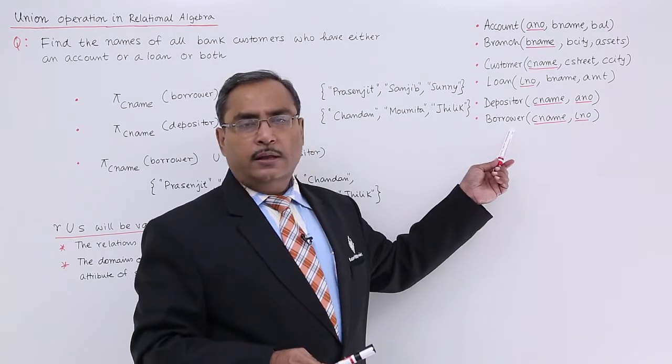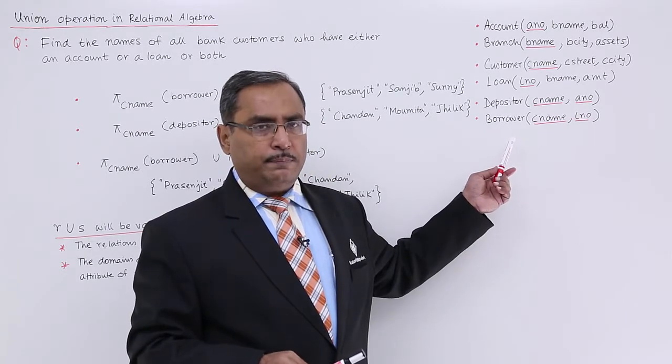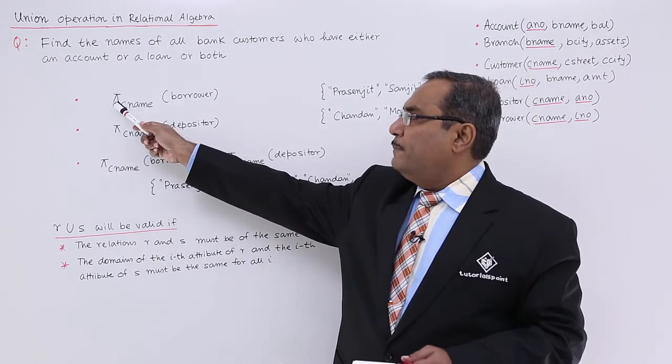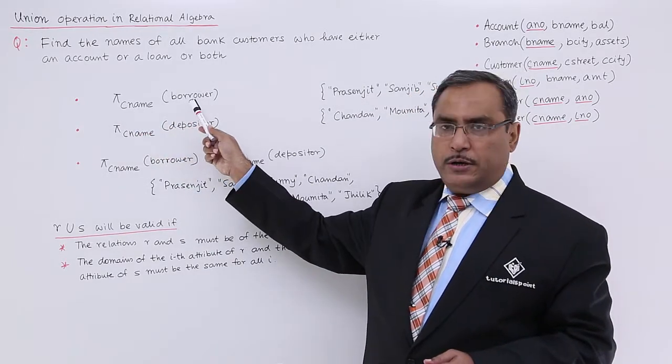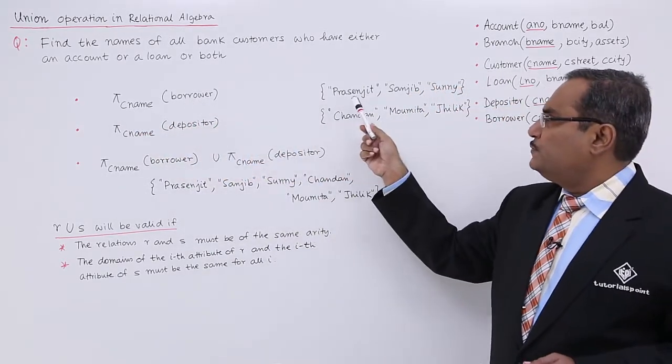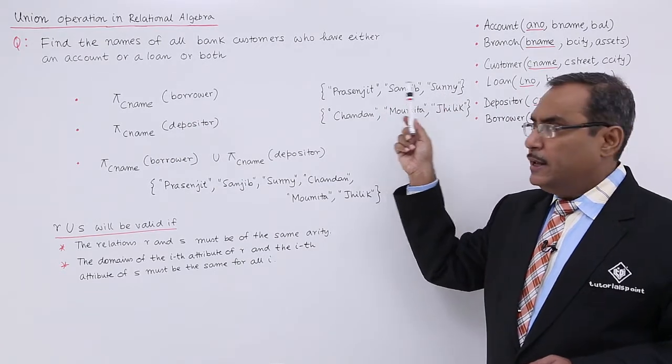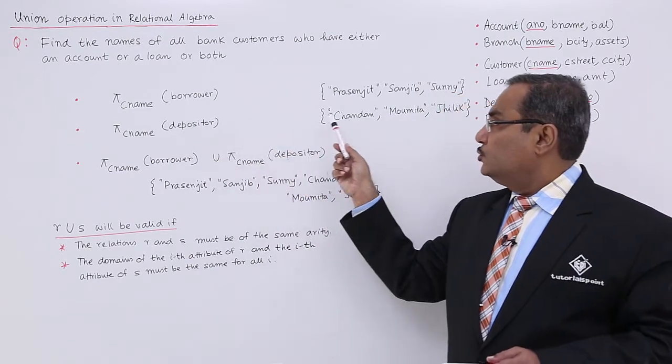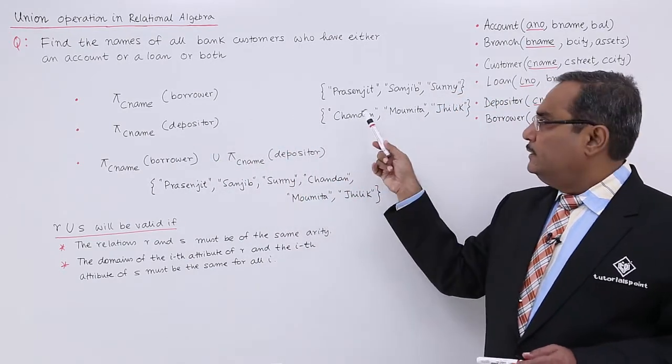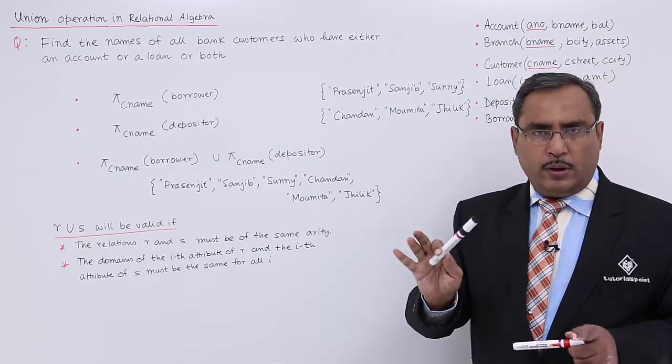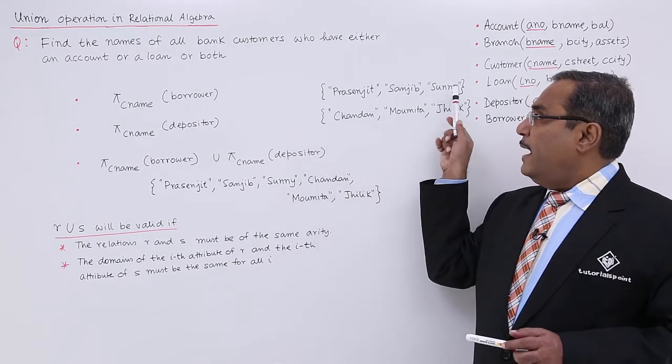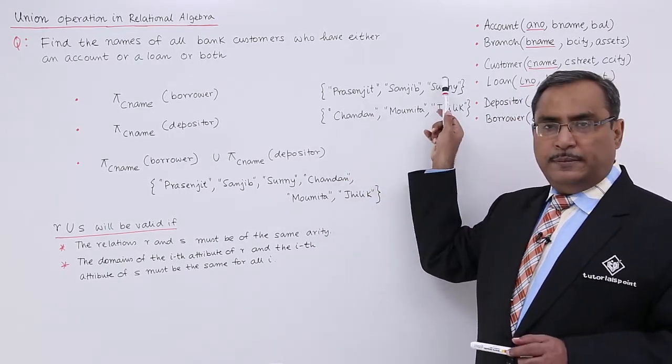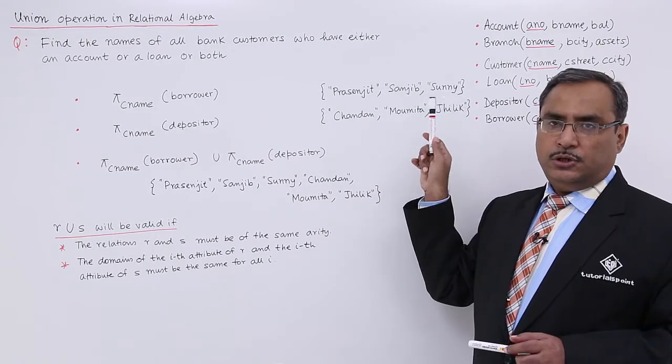It is quite simple. We will be applying the PI operation. PI means projection operation. So I shall be writing in this way: PI customer name operated on borrower. Let us suppose it is producing these three names, and then PI customer name operated on depositor. So they will produce, say, these three names arbitrarily written. It is not mandatory that they will have the same number of names. I could have three names here, I could have 30 names. That is not an issue.